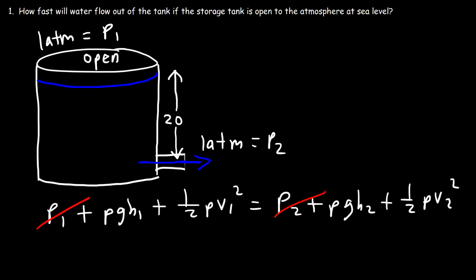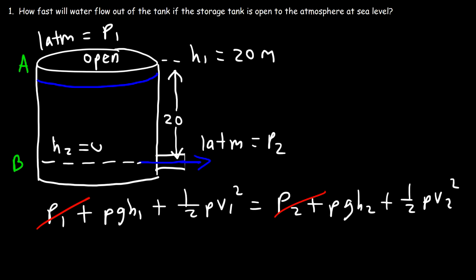Now, we define points A and B. h1 is 20 meters higher than B. Let's say B is ground level, so h1 is 20, and at point B the height is 0, so h2 is 0 since that is at ground level. So the ρgh2 term will disappear.